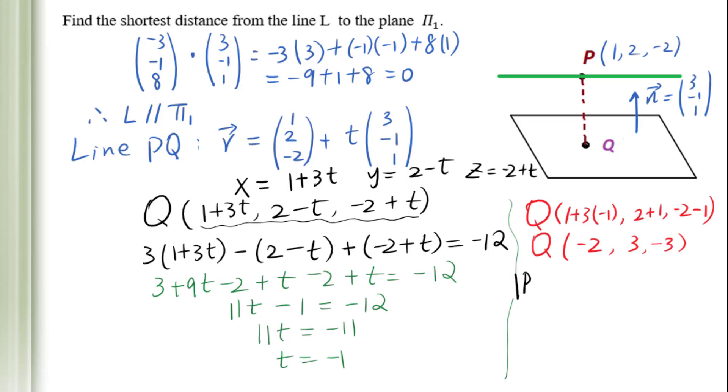The distance PQ equals, using the distance formula: square root of [(-2 - 1)² + (3 - 2)² + (-3 - (-2))²] equals square root of (9 + 1 + 1) equals square root of 11.